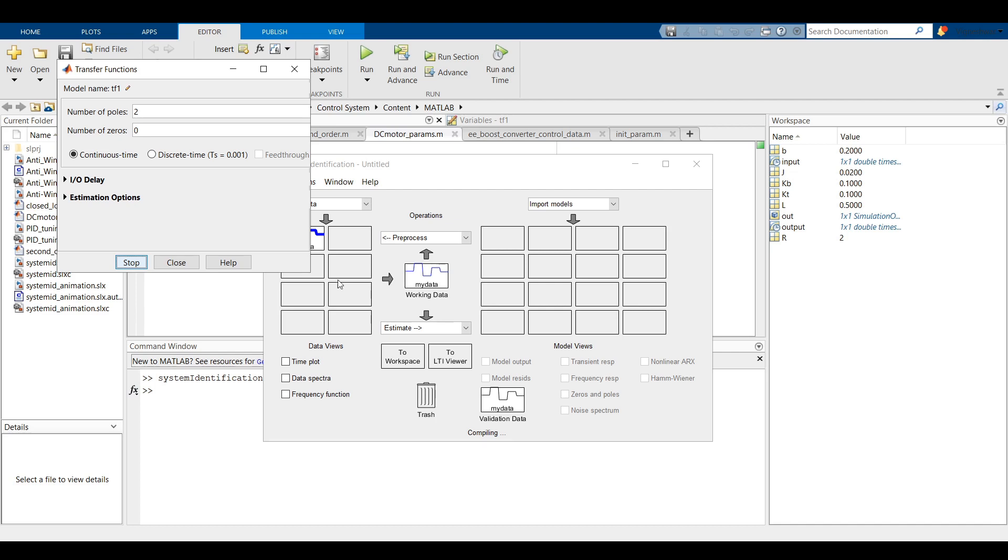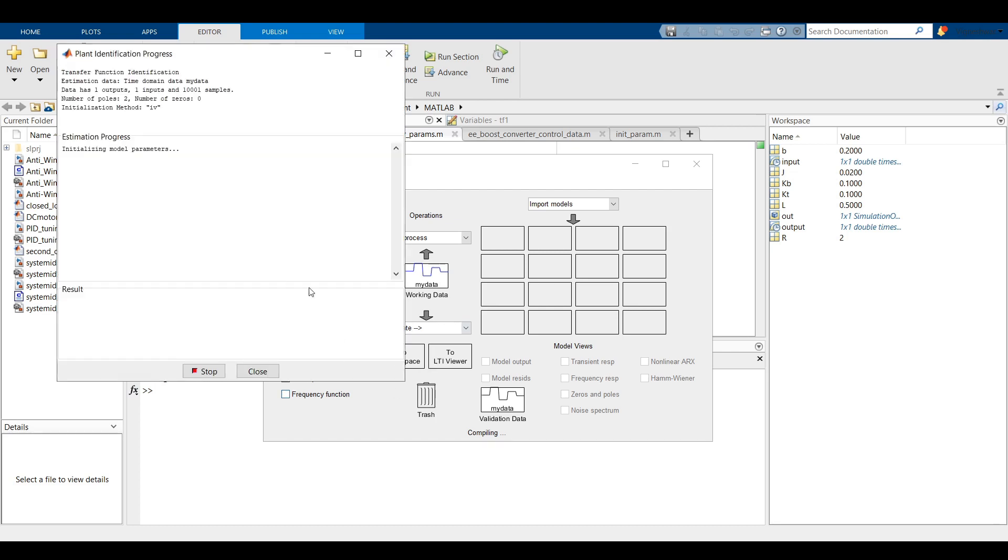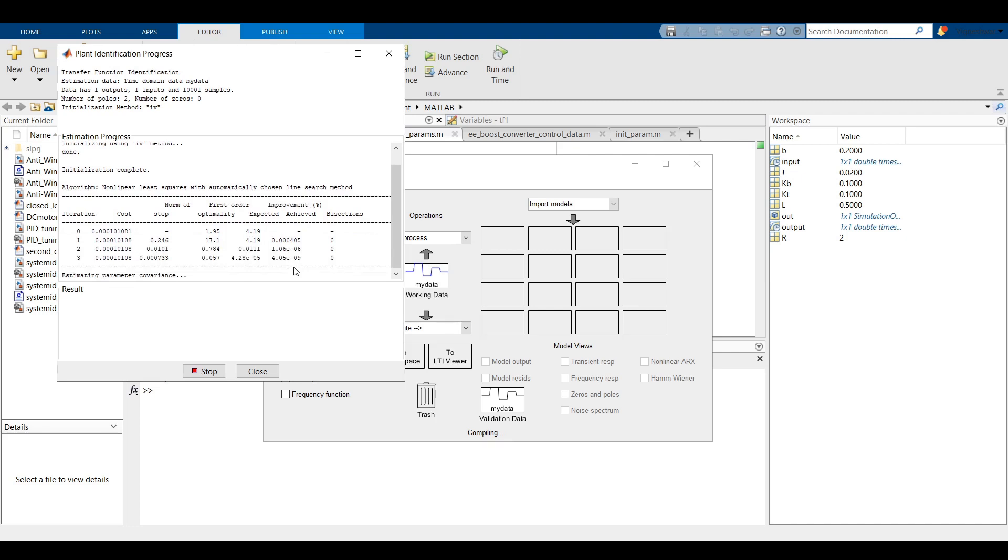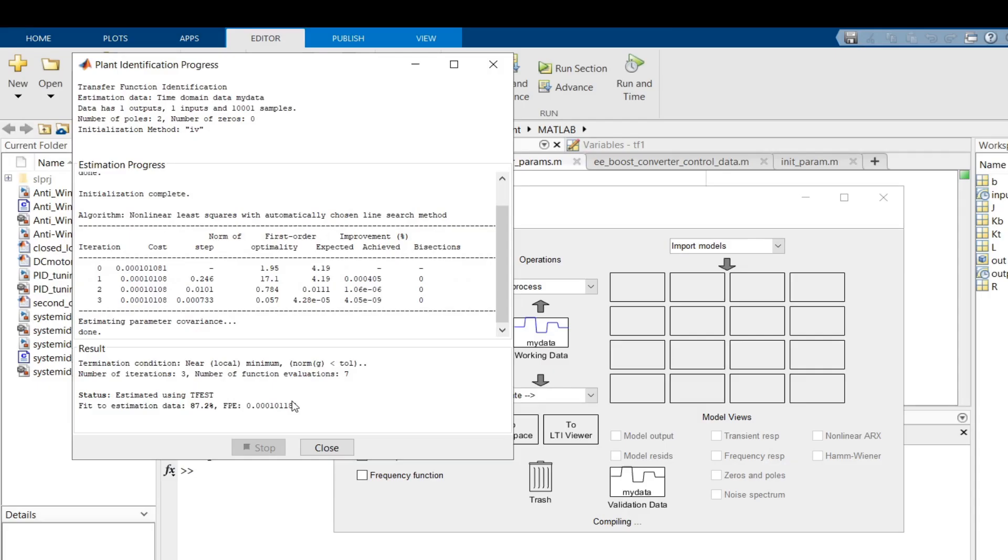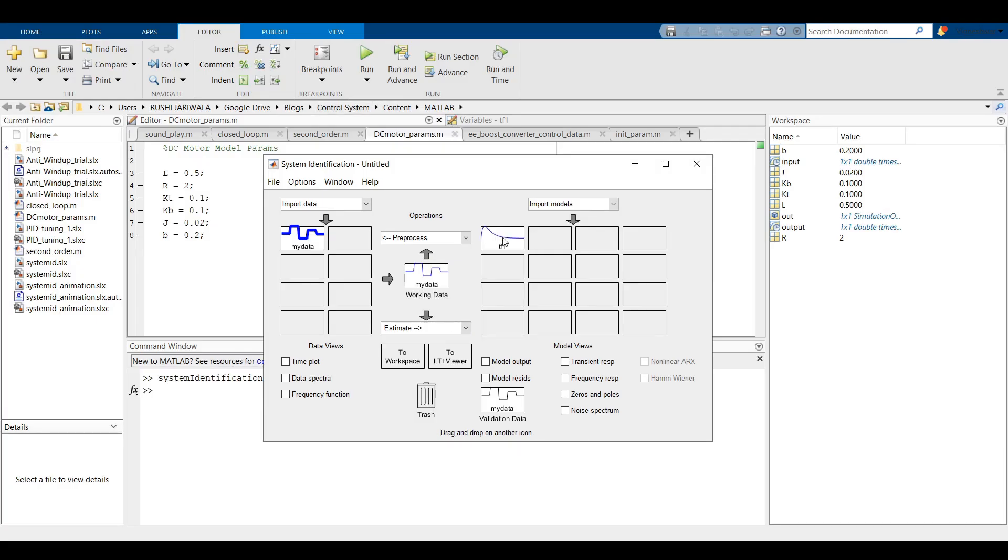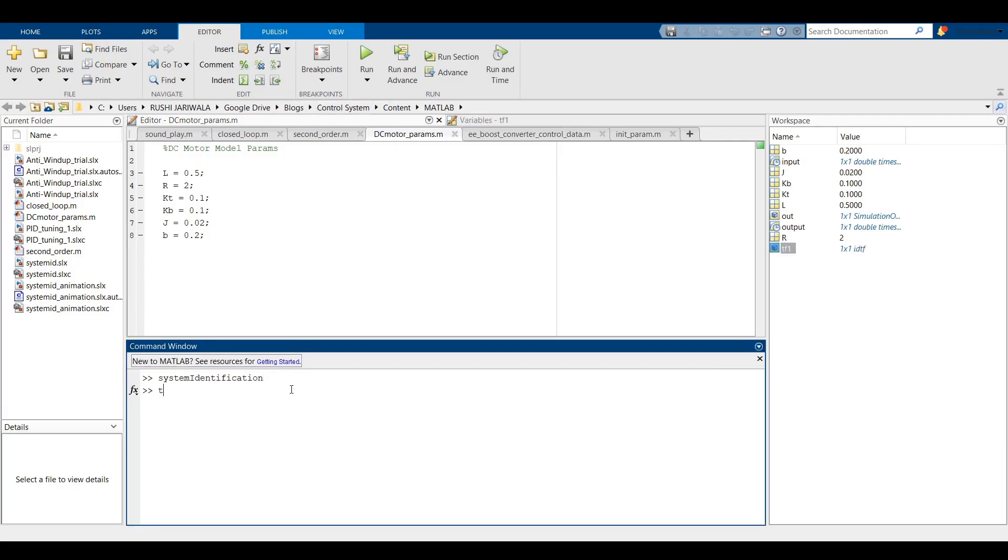We will set the number of poles as 2 and the number of zeros as 0. This is where it is helpful to have some knowledge of the system rather than assuming it as a complete black box. If you did not know anything about the system then you have to try out different combinations of poles and zeros and see which model resembles closest to the original system. It shows me that there is an 87% fit. That's great. Let us add this transfer function to a Simulink file.